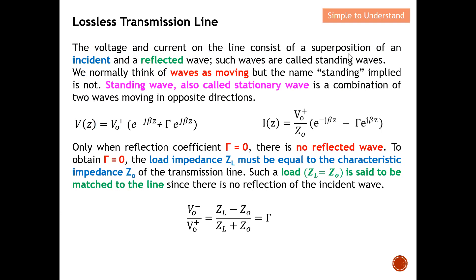The voltage and current on the line consist of a superposition of an incident wave and a reflected wave. Such waves are called standing waves — or stationary waves. We normally think of waves as moving, like waves on the sea, but the name 'standing' implies the wave is not moving. A standing wave is a combination of two waves moving in opposite directions — the incident and the reflected wave.